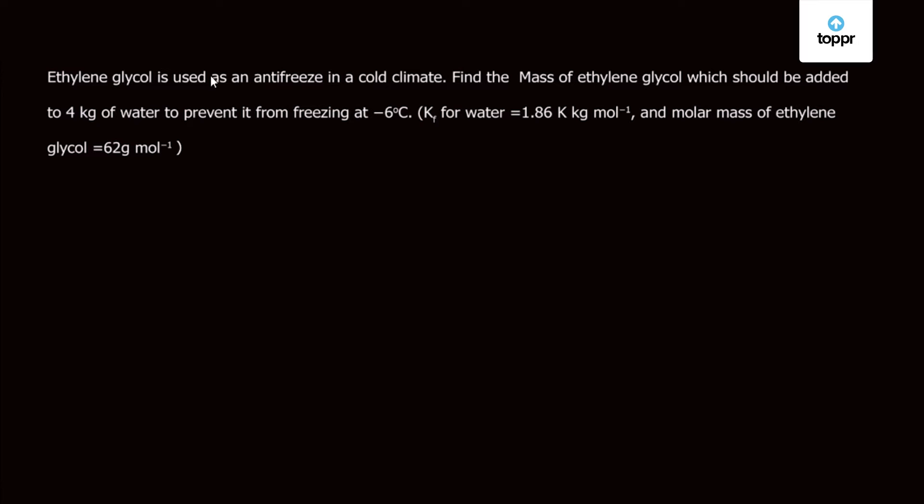The question is: ethylene glycol is used as antifreeze in cold climate. Find the mass of ethylene glycol which should be added to 4 kg of water to prevent it from freezing at minus 6 degrees Celsius.